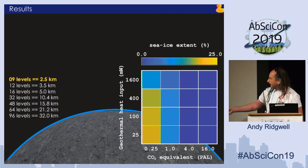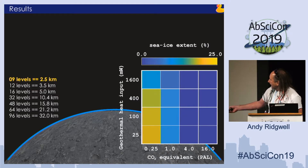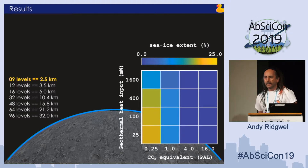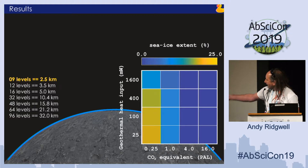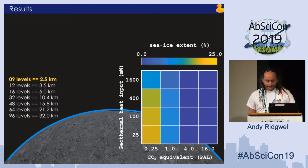The simplest case is just the water on the modern Earth redistributed over a billiard ball. This is a plot of the sea ice extent — there's nothing you wouldn't guess here. Low CO2 means more sea ice, high CO2 means less sea ice, so I don't think there's a Nobel Prize in this.